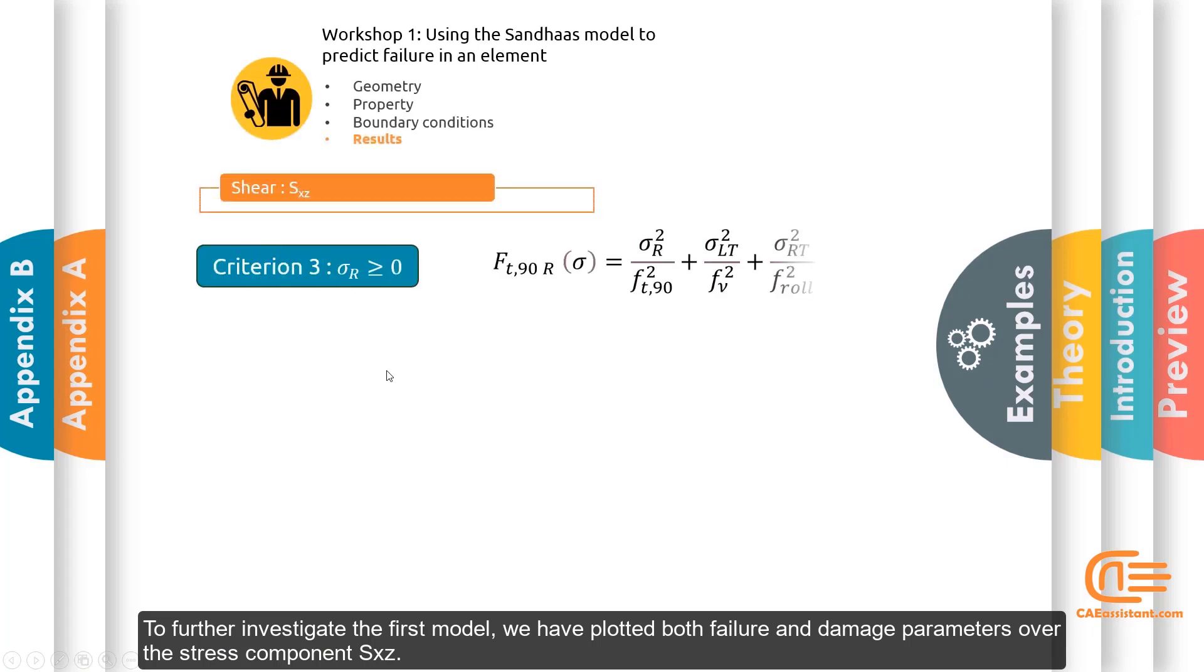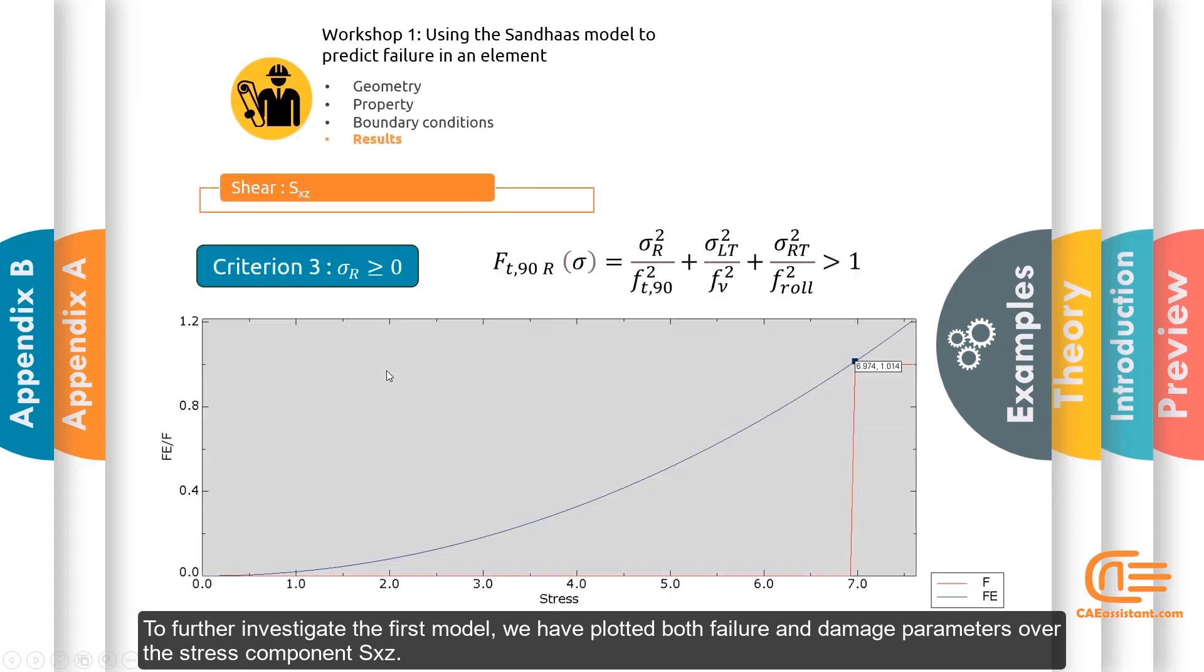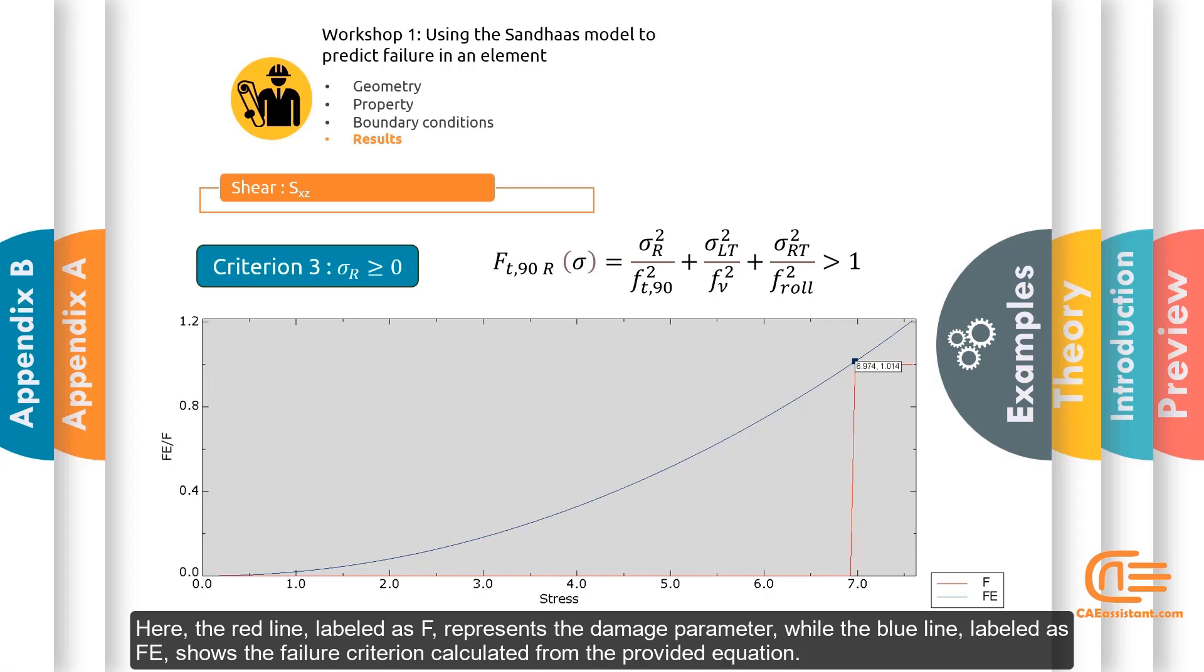To further investigate the first model, we have plotted both failure and damage parameters over the stress component SXZ. Here, the red line labeled as F represents the damage parameter, while the blue line labeled as EF shows the failure criterion calculated from the provided equation.